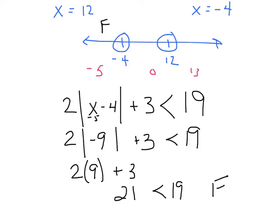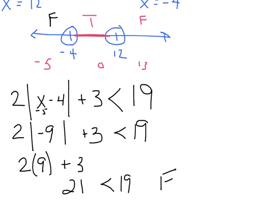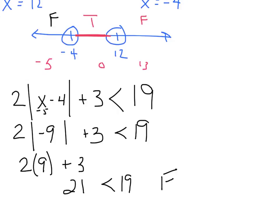Testing zero: zero minus four is negative four; the absolute value is four; four times two is eight, plus three is eleven. Is eleven less than nineteen? True. Testing thirteen also gives false. So I shade in the middle where it's true. The answer is negative four is less than x is less than twelve, or in interval notation: open parenthesis negative four comma twelve close parenthesis.